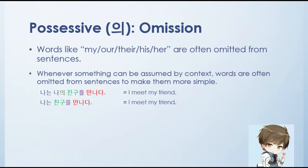Alright, let's move to omission. The words my, our, their, his, or her are often omitted from sentences. The reason is that Koreans tend to shorten sentences. If it's understood or assumed from the context, they just leave it out. For example, 'I meet my friend' — if said in full: nanen, nae, ching-gurul, manada. Here, my is nae. But Koreans often omit nae, so it becomes: nanen, ching-gurul, manada. This shorter form is acceptable and more common.